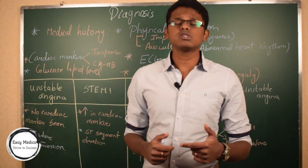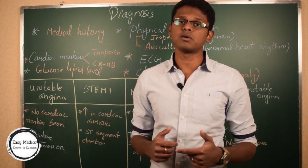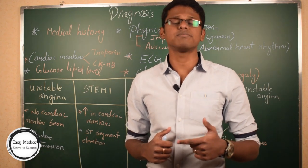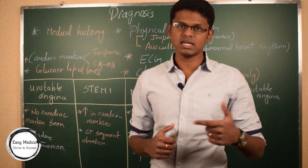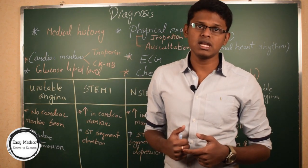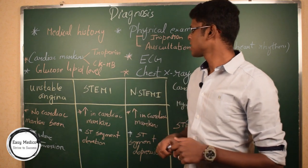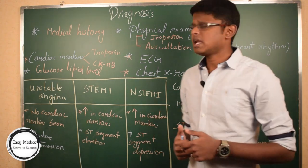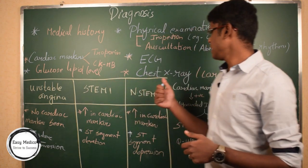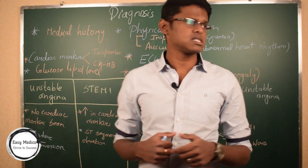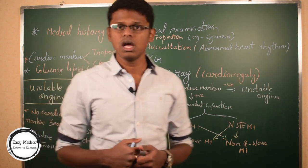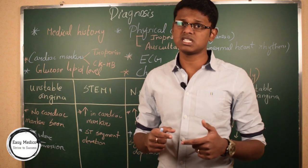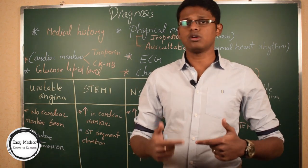The most important diagnostic method for heart problems is cardiac markers. These are enzymes released during cardiac muscle injury or death. The two main enzymes are troponin and creatinine kinase, which is CK-MB. Next is ECG, which is electrocardiogram. We also check glucose and lipid levels and chest X-ray — in the chest X-ray, we check for the presence of cardiomegaly. Cardiac markers are very important to differentiate between unstable angina, STEMI, and non-STEMI.